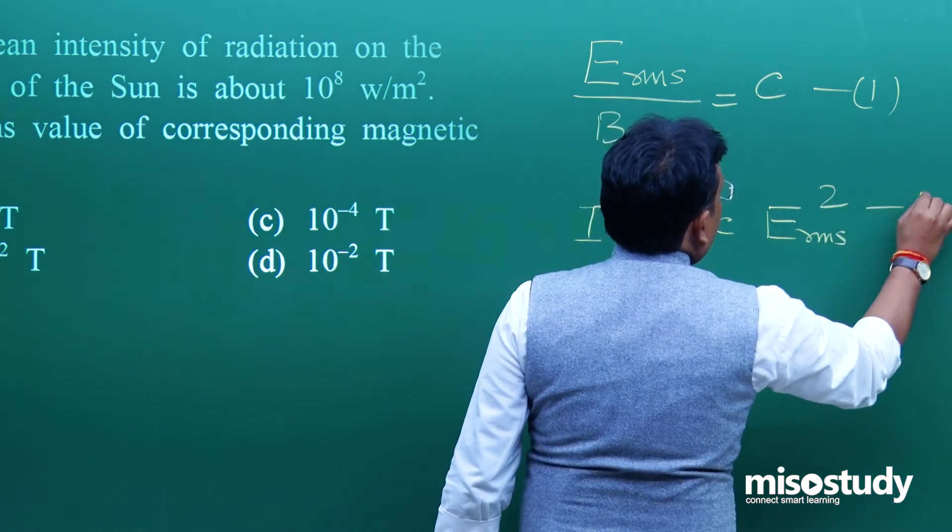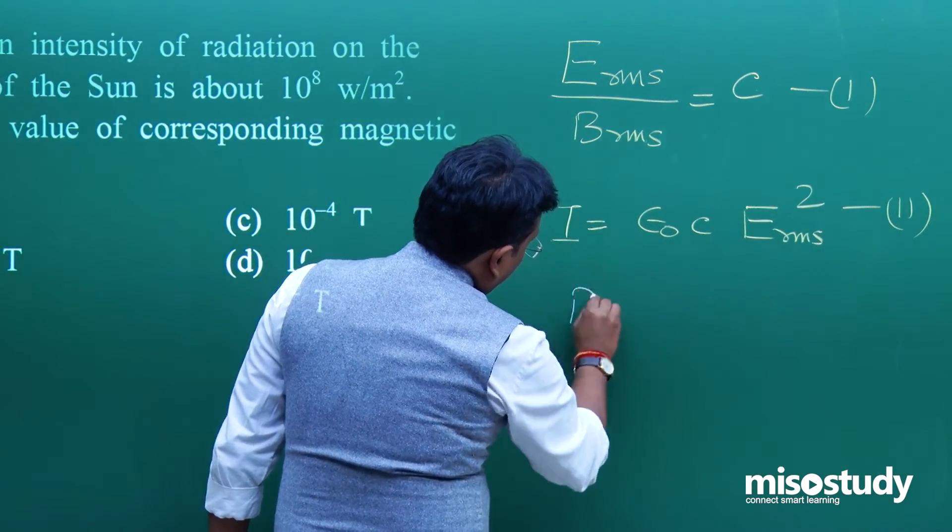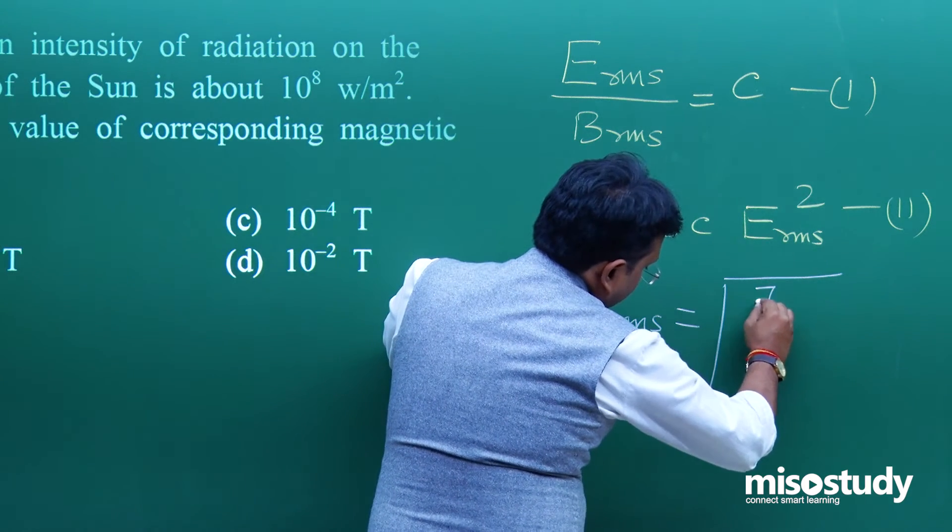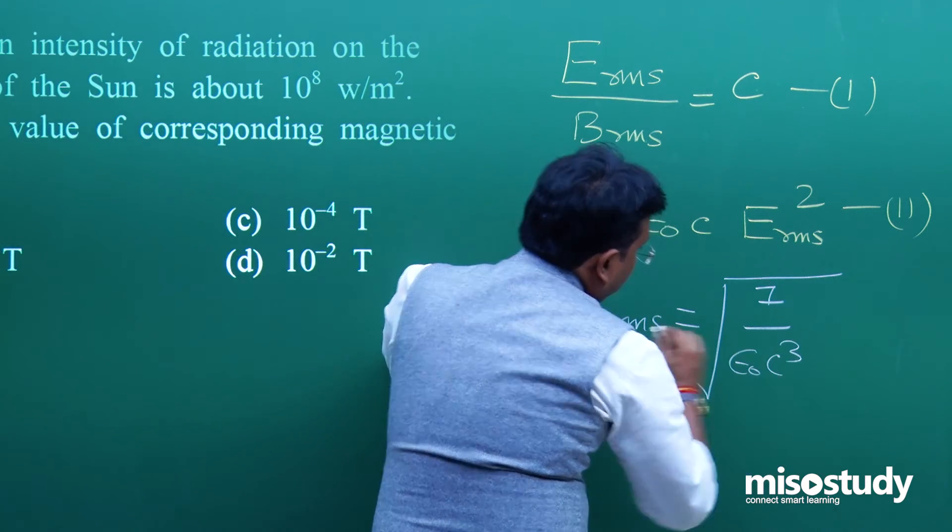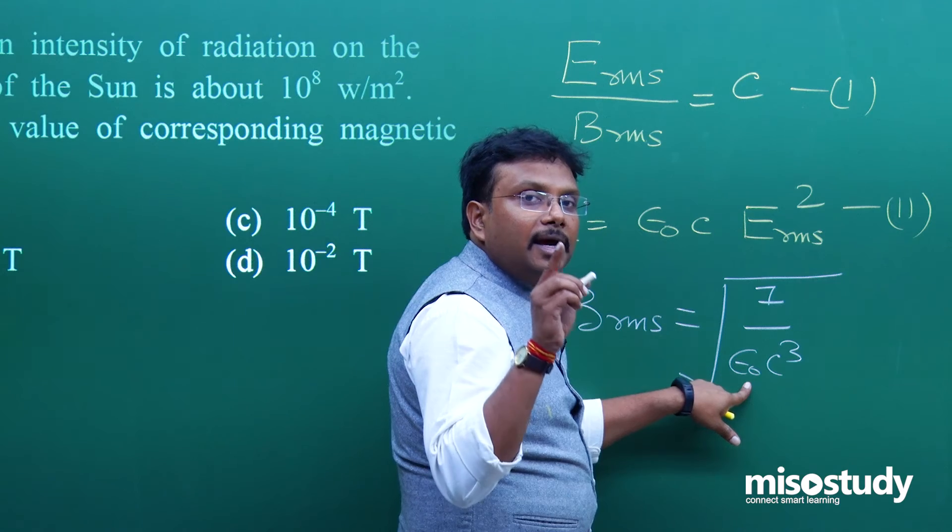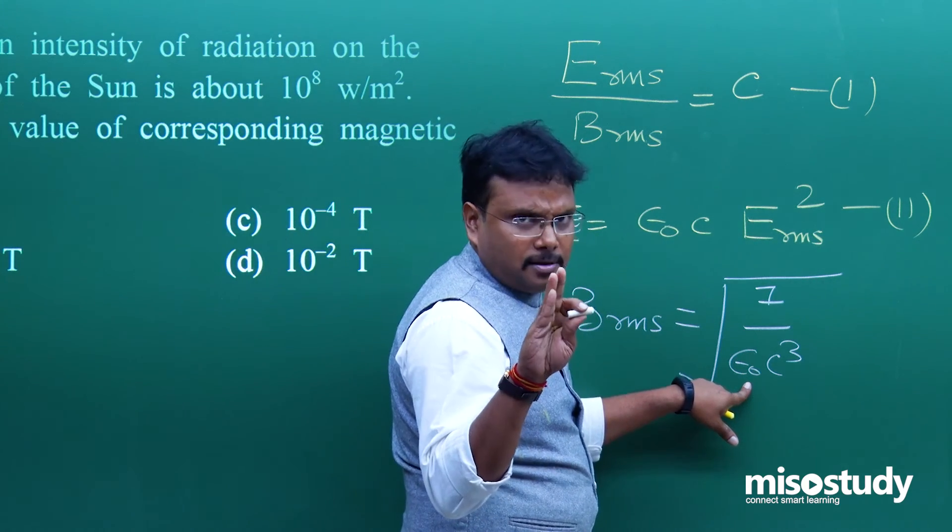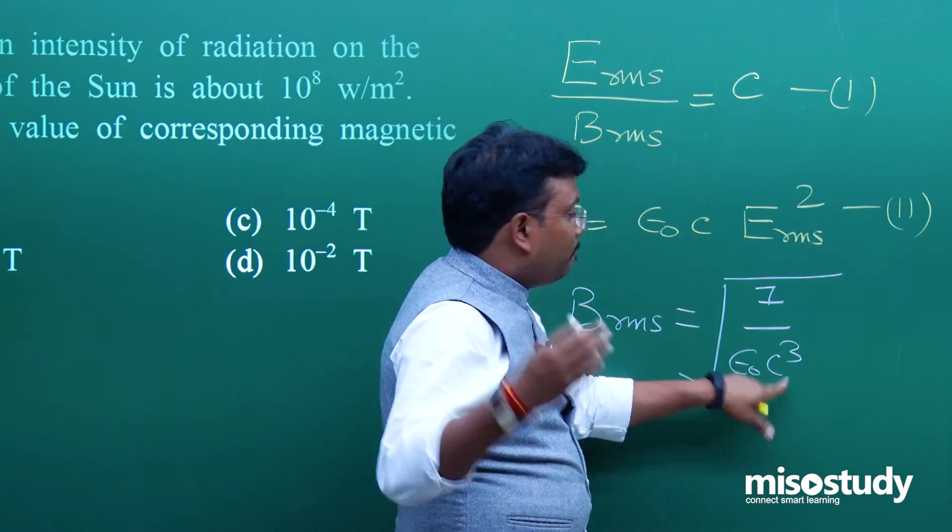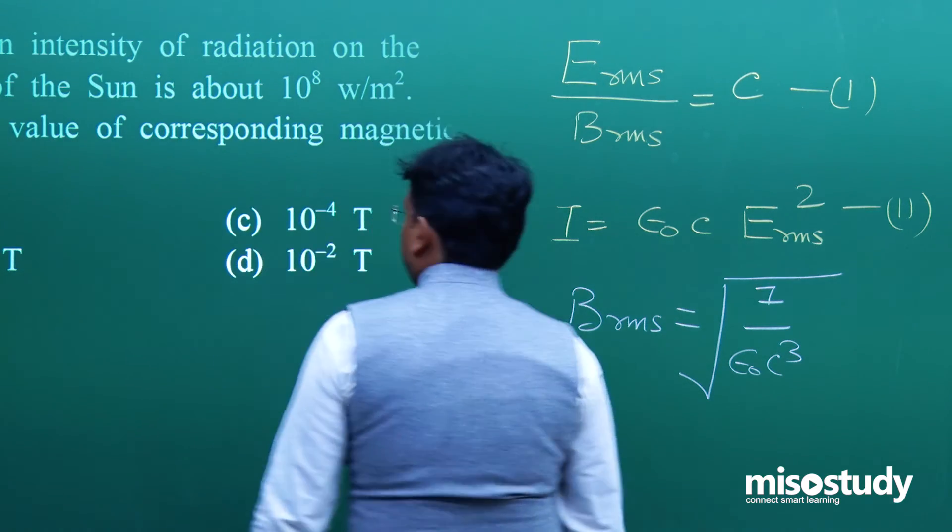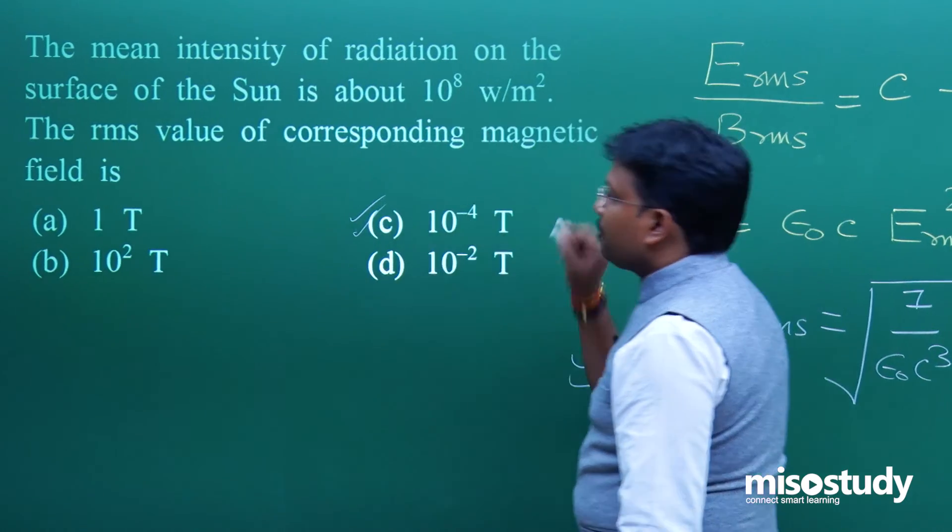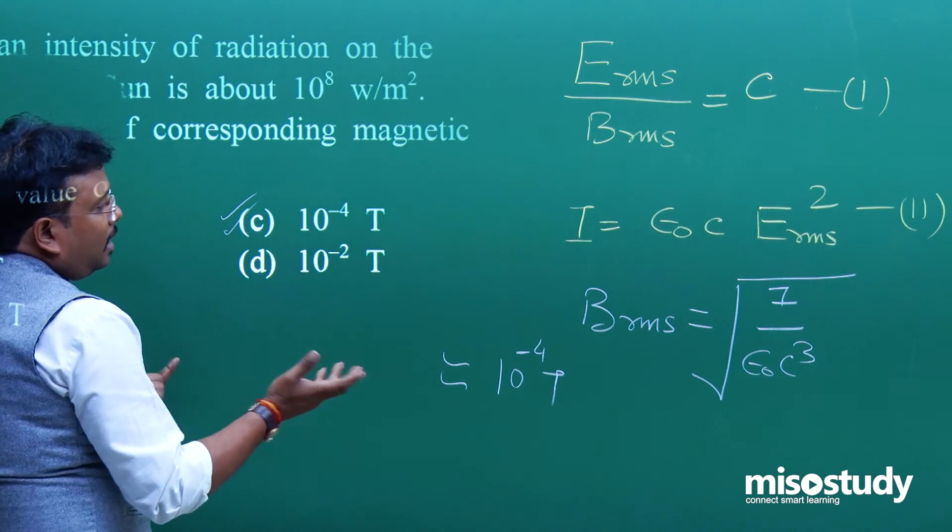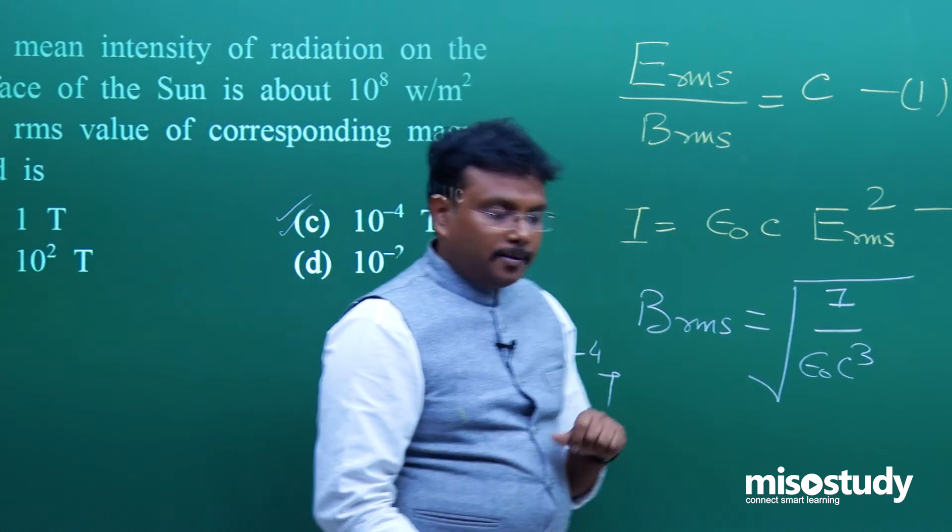Equation 1, equation 2 - replace the values and solve. You'll get B_RMS equals square root of I upon epsilon_0 C cubed. Put the value of I as 10^8, epsilon_0 as 8.85 times 10^-12 (better use 9), and C cubed as 3 times 10^8 cubed. Once you solve, you'll get nearly 10^-4 Tesla. C is your correct option. Please take a look at this formula, and if you do some practice you will not forget this result.